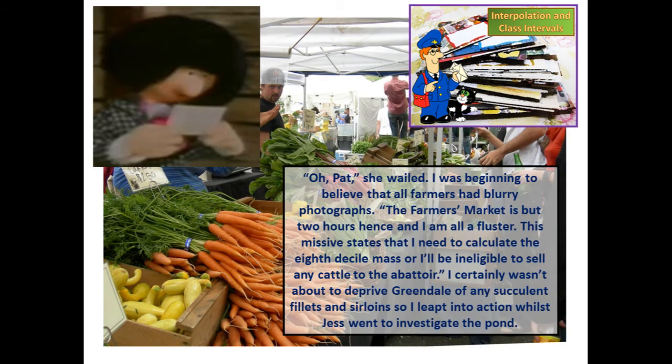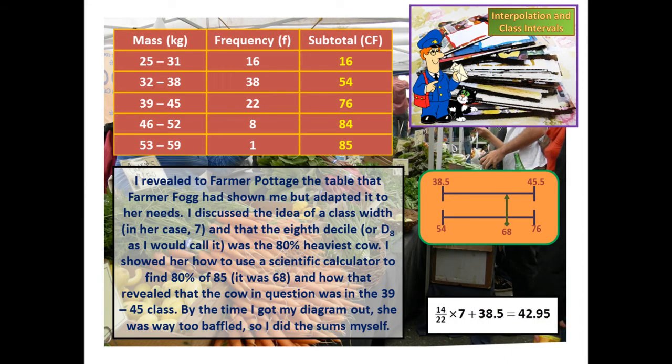'Oh Pat!' she wailed. I was beginning to believe that all farmers had blurry photographs. 'The farmer's market is but two hours hence and I am all a fluster. This missive states that I need to calculate the 8th decile mass or be ineligible to sell any cattle to the abattoir.' I certainly wasn't about to deprive Greendale of any succulent fillets and sirloins so I leapt into action. I revealed to farmer Pottage the table that farmer Fogg had shown me but adapted it to her needs. I discussed the idea of a class width — in her case 7 — and the 8th decile, or D8 as I would call it, was the 80% heaviest cow.